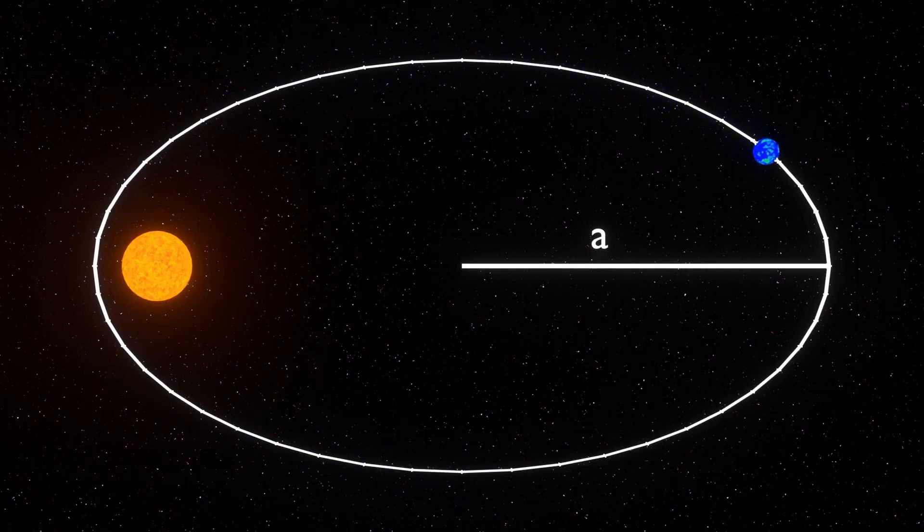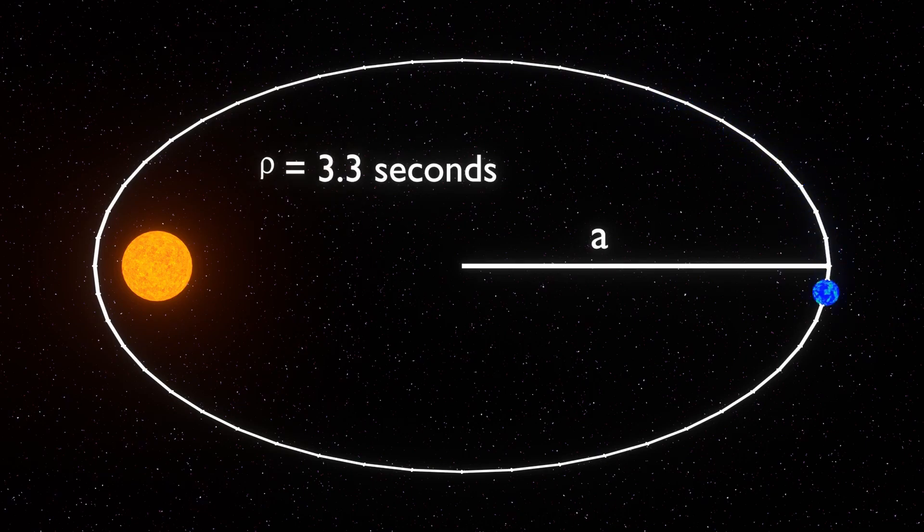This is a semi-major axis. It connects from the center to the ellipse point. The period is the time it takes for one full orbit to be completed.